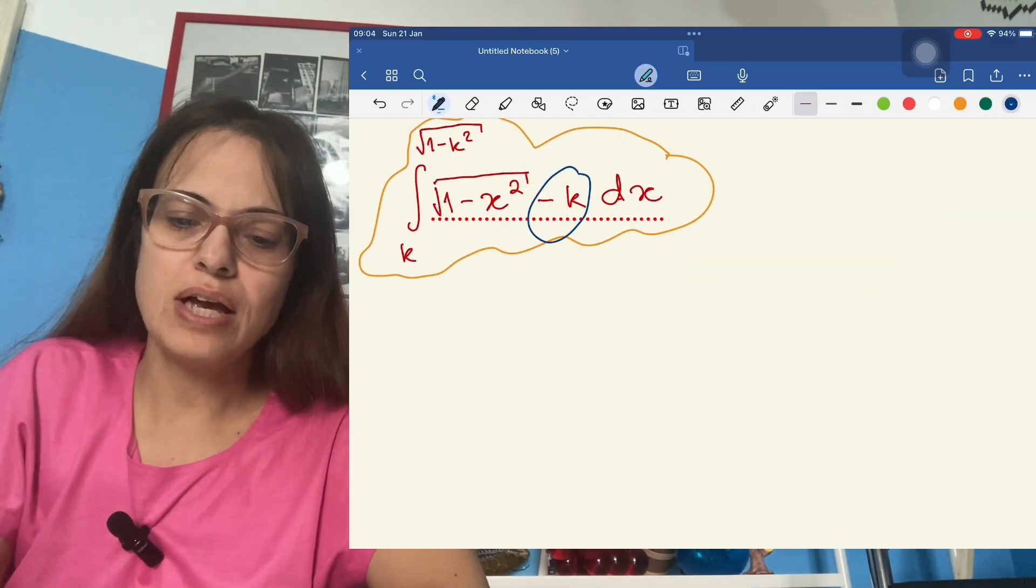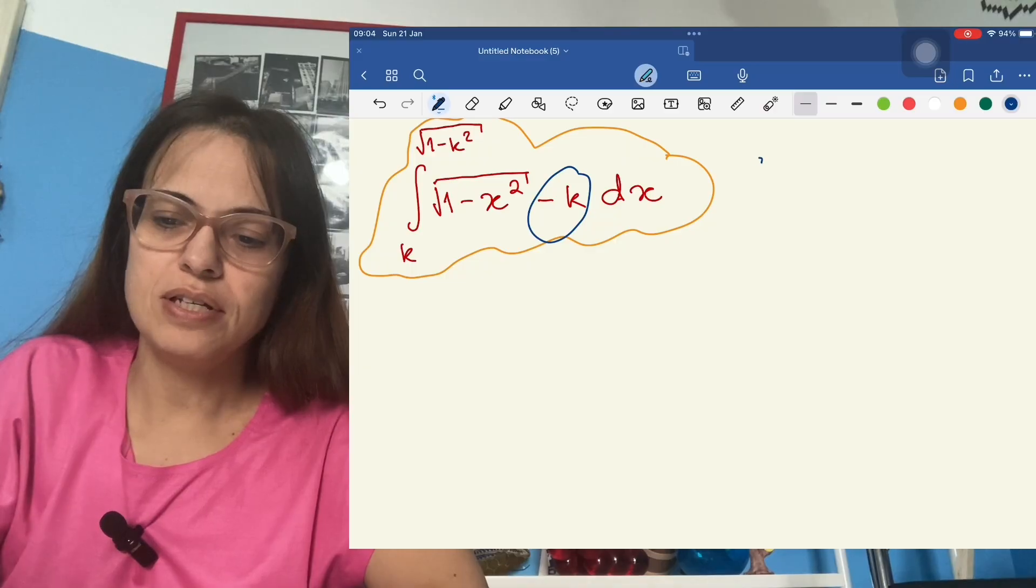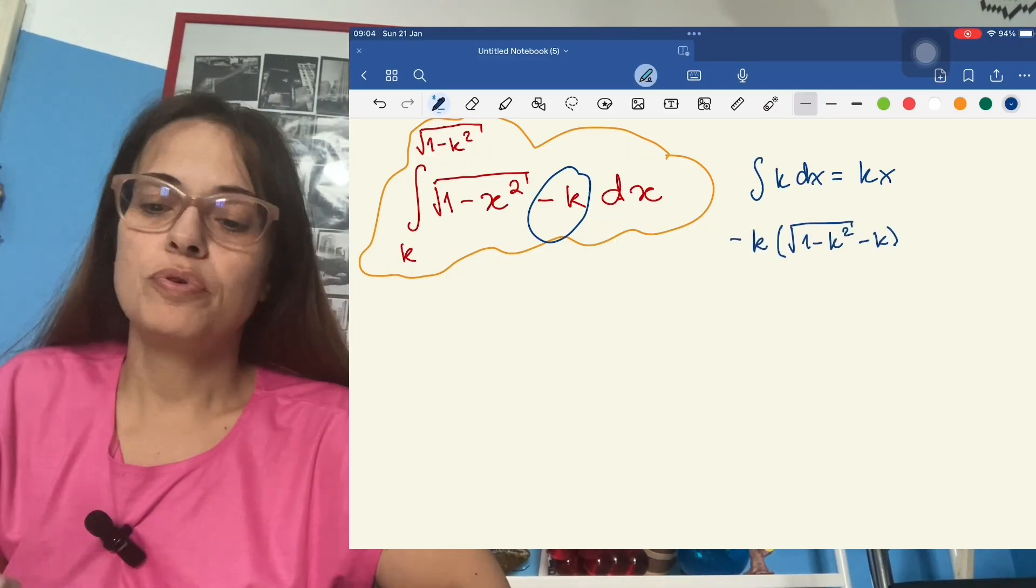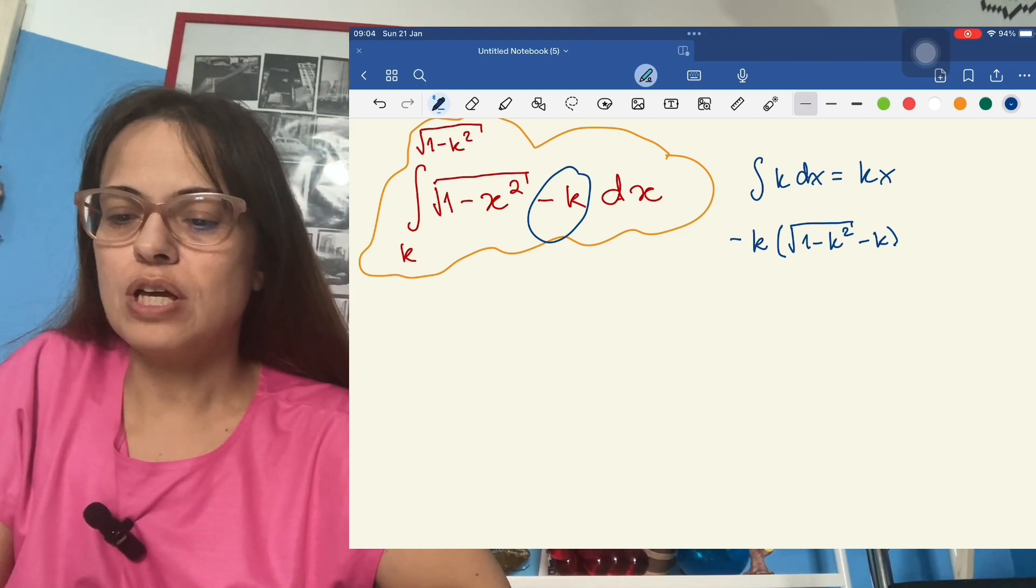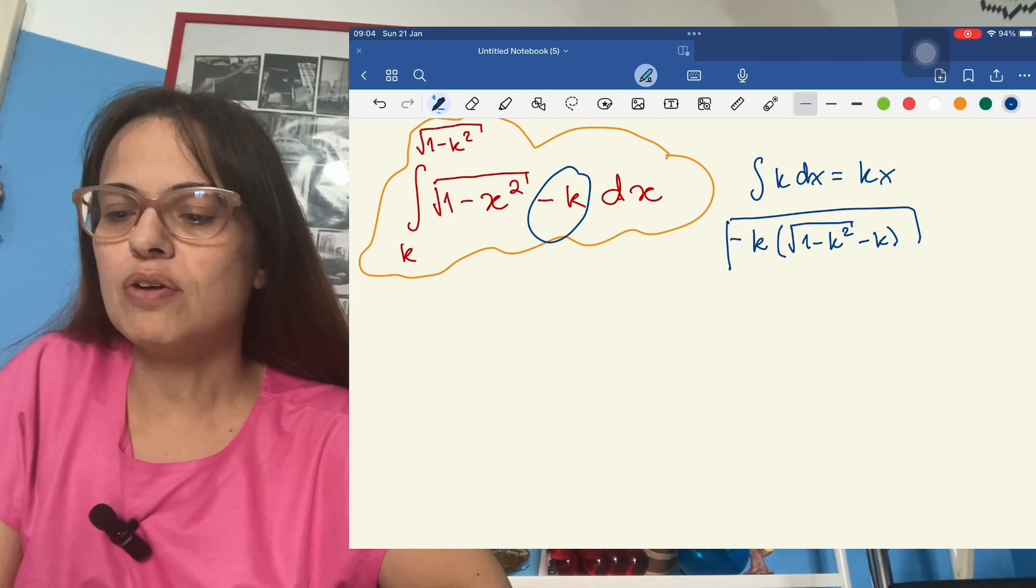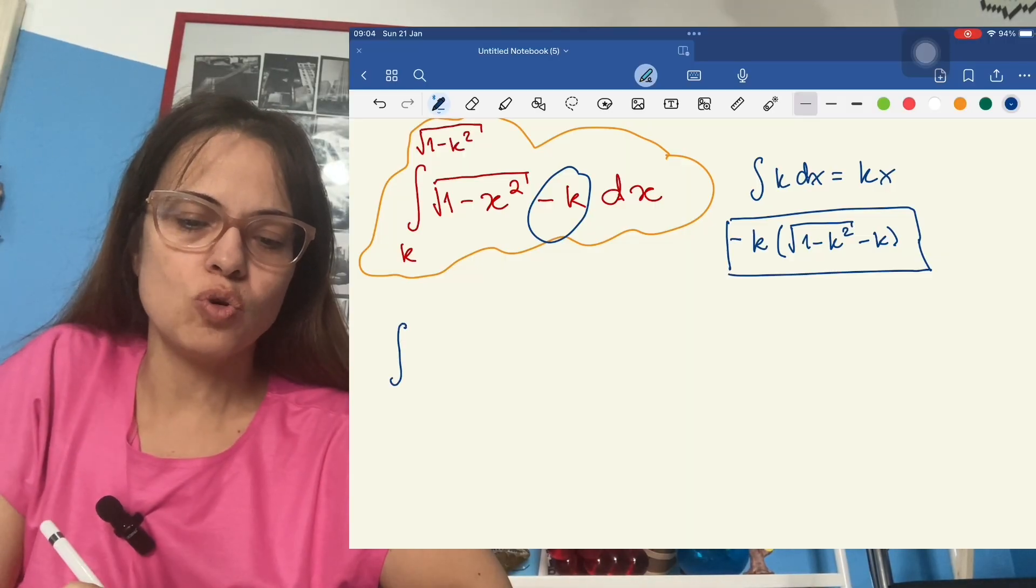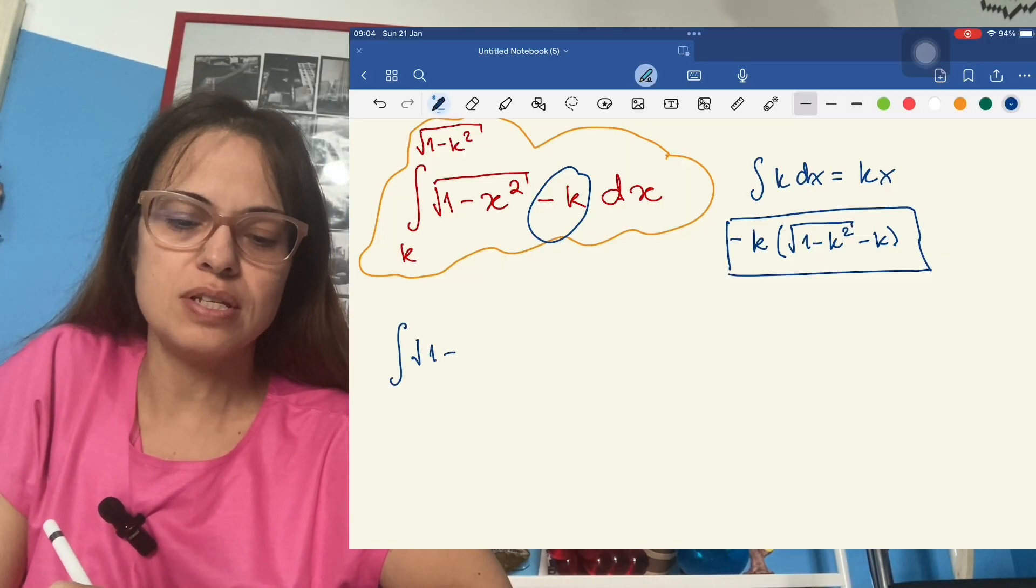Now it's a calculus problem. So let's go ahead and solve this integral. So the second half is quite easy. The integral of K dx is just K times X. And when you put the limits of integration, that's what you get. So this is the thing that we're going to have to subtract in the end. But the actual work is going to be to solve this integral.